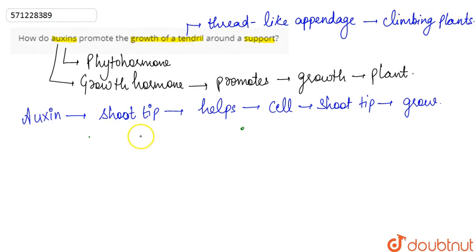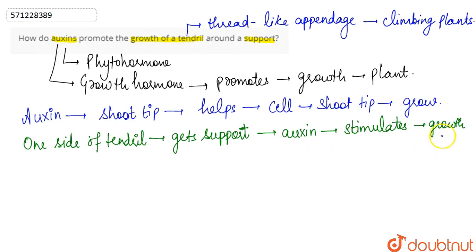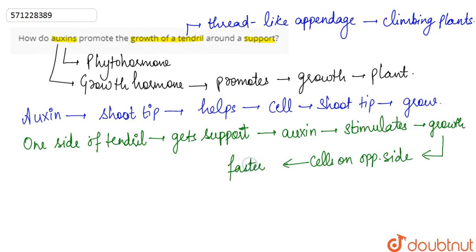When one side of the tendril gets the support, the auxin at that point stimulates the growth of the cells on the opposite side more and more faster. So when one side of the tendril gets support, the auxin on the other side basically stimulates faster growth of the cells on the opposite side.